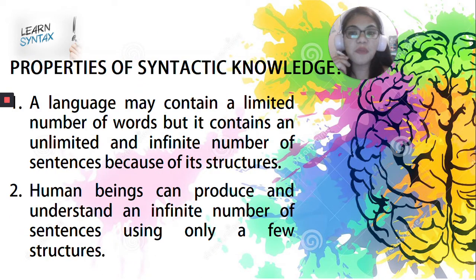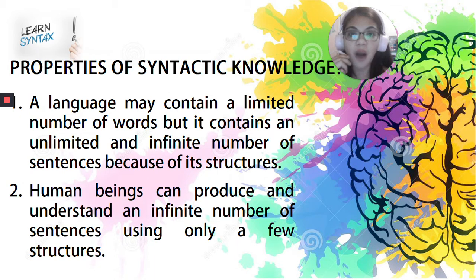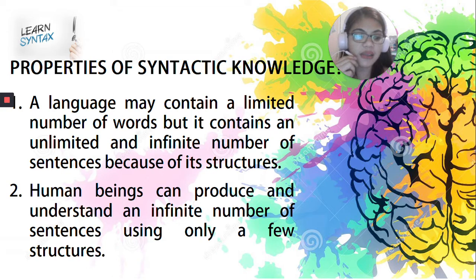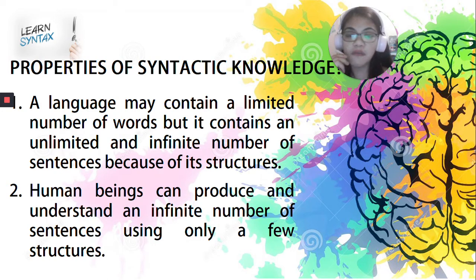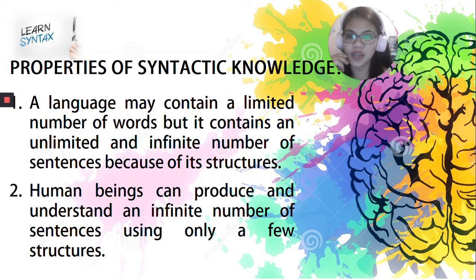So what are the different properties of syntactic knowledge? There are five, but first let us focus on the first two because these two properties are quite complementary in nature. These are proofs of one of the basic properties of syntax — that language makes infinite use of a finite set of rules and principles. These two properties of syntactic knowledge are proofs of such a property of syntax in general.